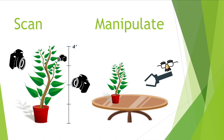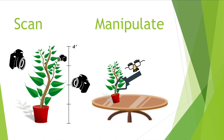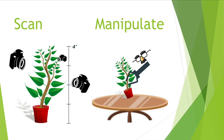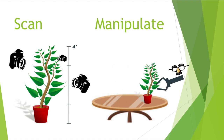At this point, the robot can pick up the plant and put it down in a different spot on the table. However, once the movement is complete, the robot no longer knows the orientation of the plant and can no longer see it. At this point, we need to repeat the scan and manipulation cycle.